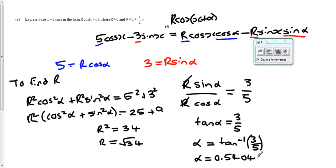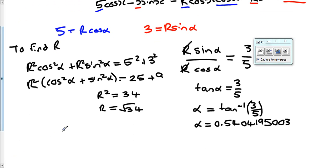I end up with 0.54, and I'm going to write out my whole calculator display so the examiner is in no doubt about my abilities: 0.5404950003. So finally, we have expressed 5cos(x) - 3sin(x) and we've discovered that is equal to R, which is square root of 34, times cos(x + α), which is 0.54.